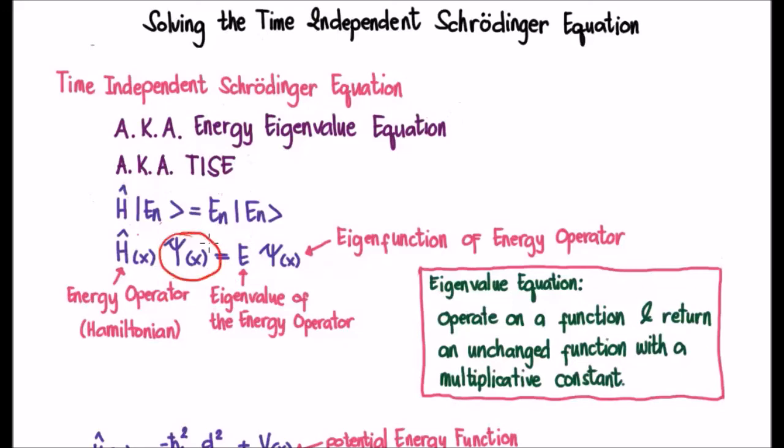And the wave function is going to be the eigenfunction of the Hamiltonian operator. We always refer back to the operator.